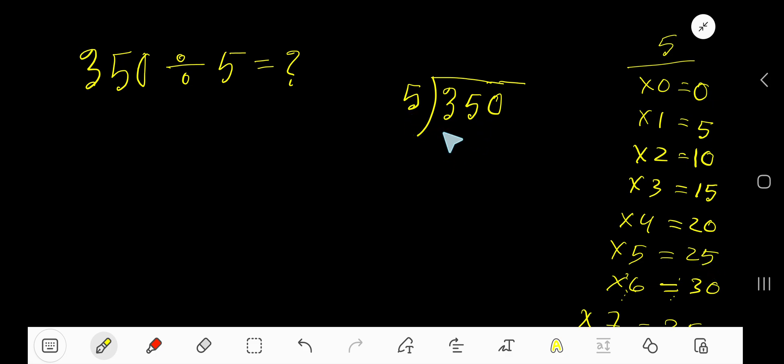5 goes into 3 how many times? Zero times, as 3 is less than 5. So 0 times 5 is 0, subtract from 3.